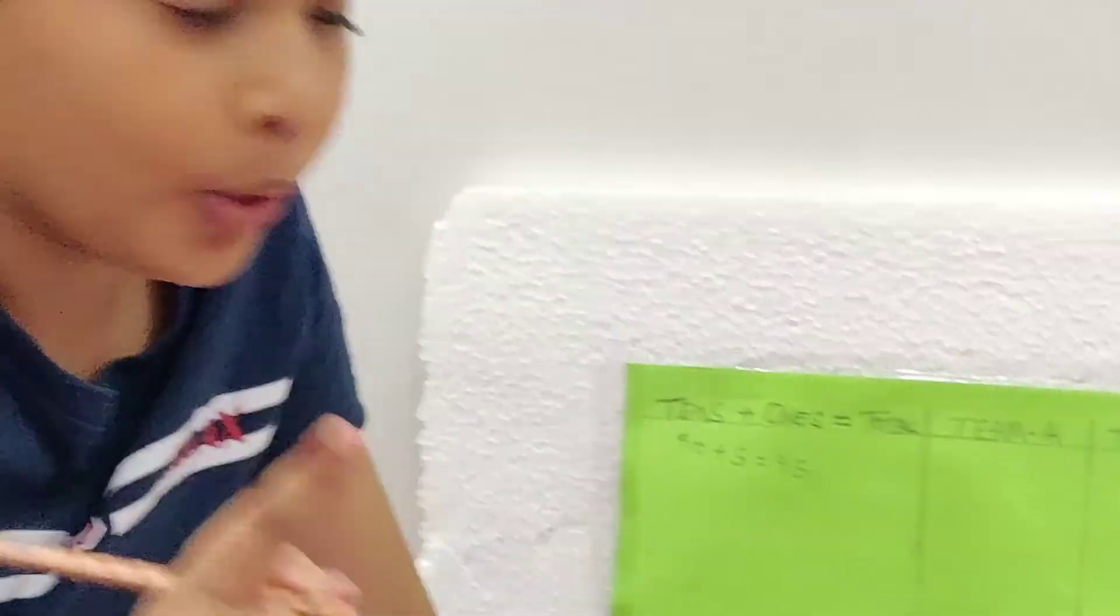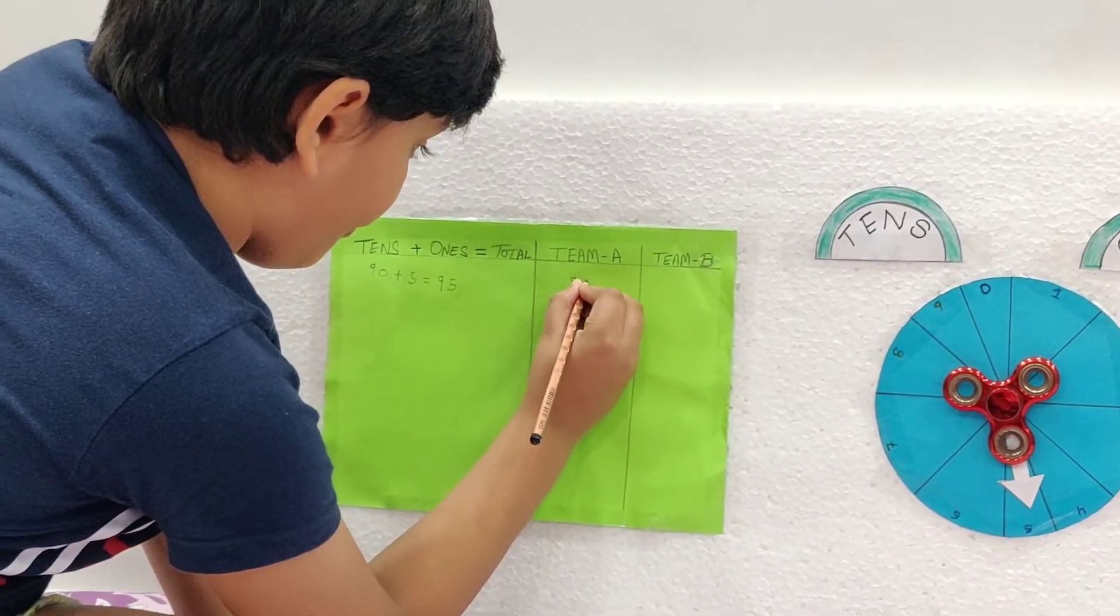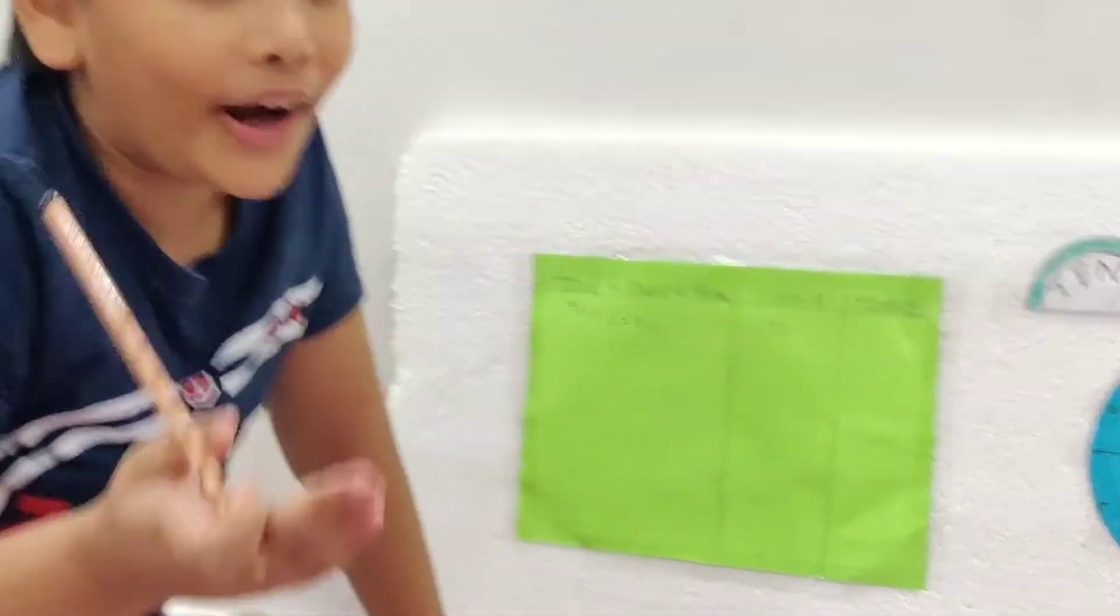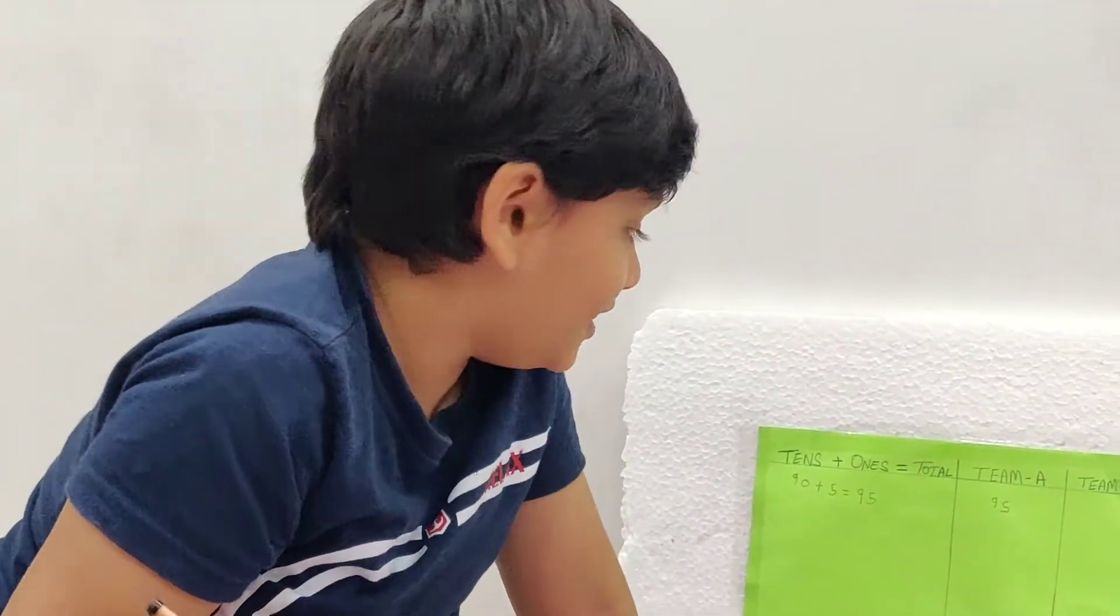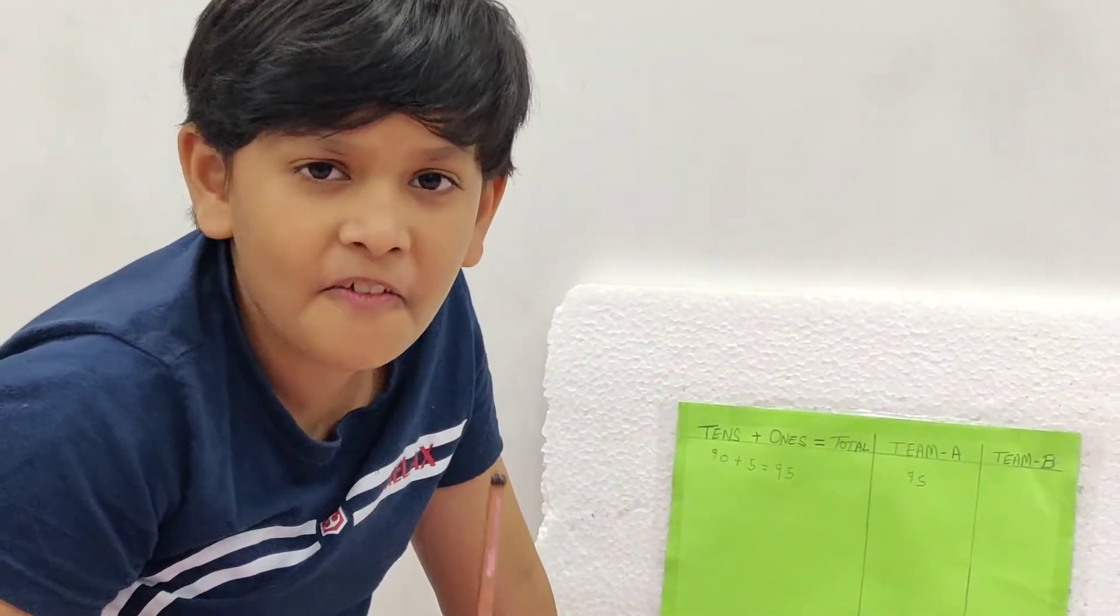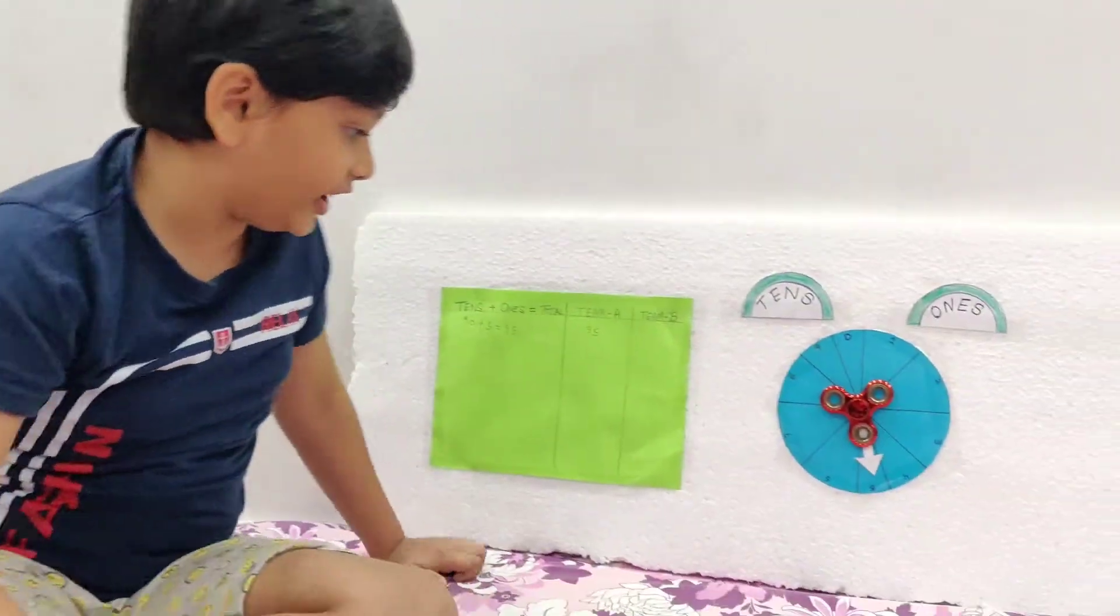And our answer is 95. So Team A got 95 points. Now this is the time for team B. Let's get started.